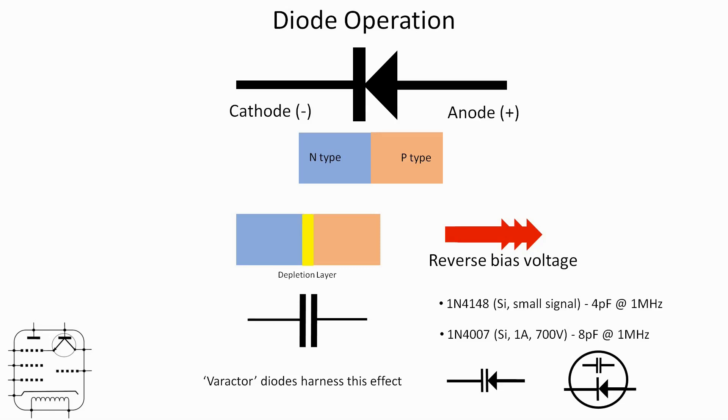So how can we make use of this voltage controlled capacitor because essentially that is what it is, when the diode is reverse biased we have a voltage controlled capacitor. Well there are several ways to use it, we are going to look at three ways today.